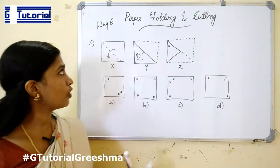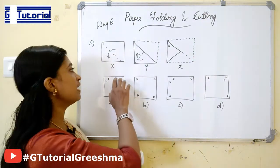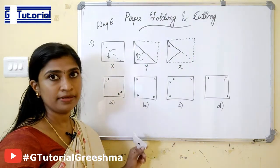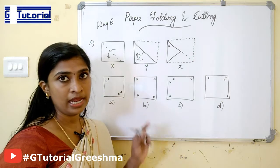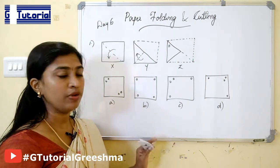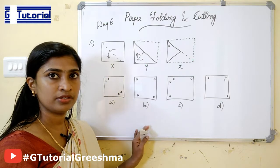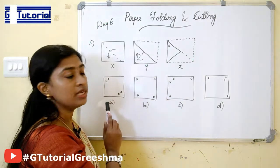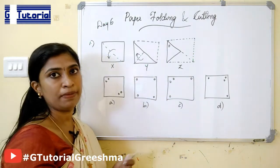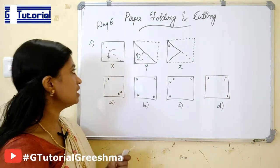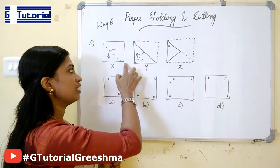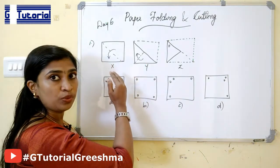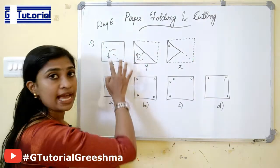In this type of problem, we will be given two or more figures. These figures show how a paper is folded and finally cut, and then when we are unfolding it, what will be the final figure. The dotted lines are the reference line along which the paper is folded, and the arrow denotes the direction in which the paper is folded.